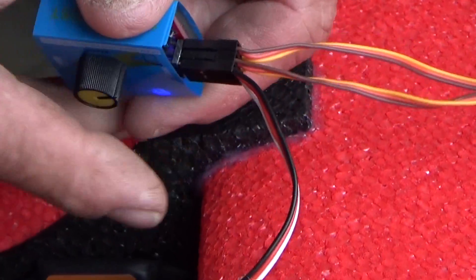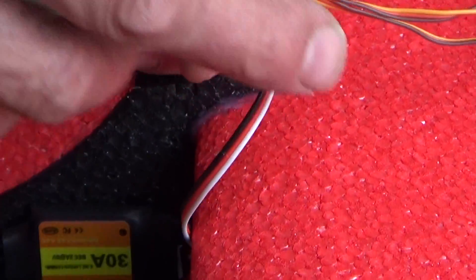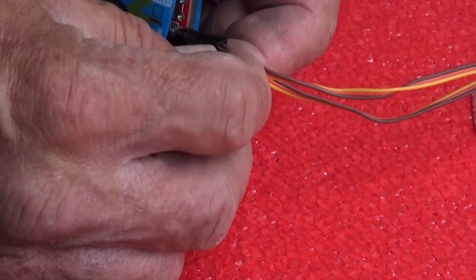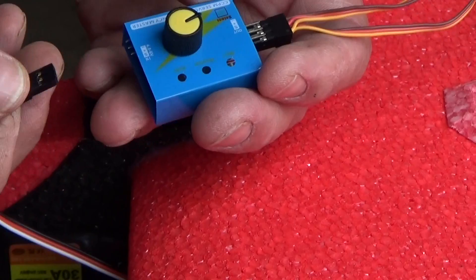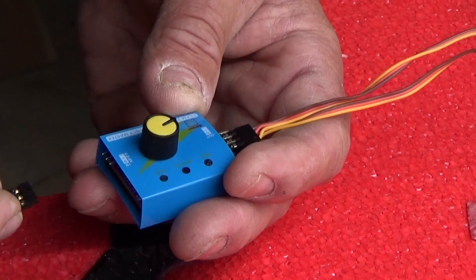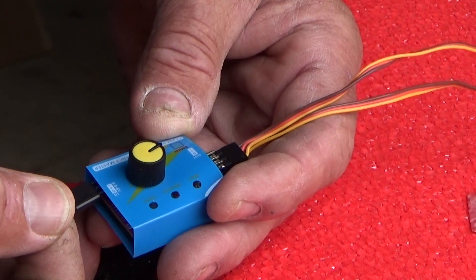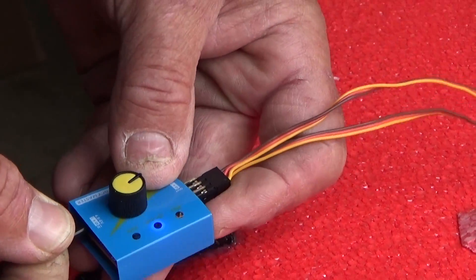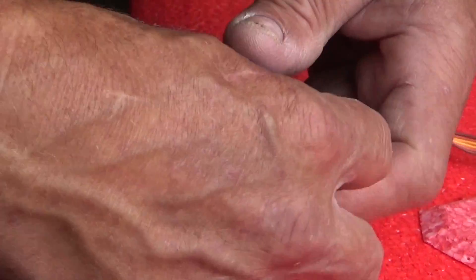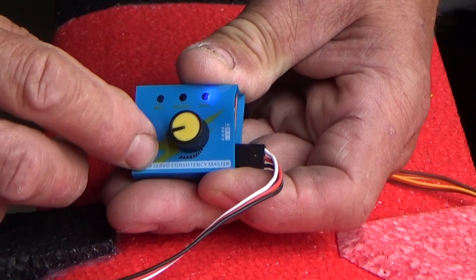Now if I want to test only the servos, what I need to do is disconnect the speed controller, which is telling me it's disconnected, and power it up from this side. That way when I turn the dial, I don't control the speed controller.